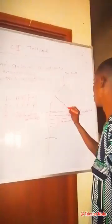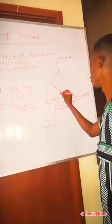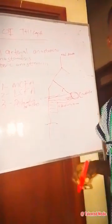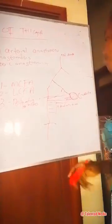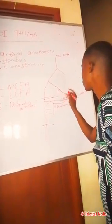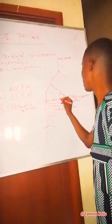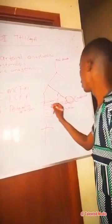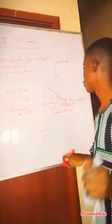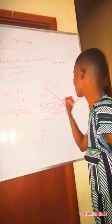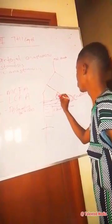The third anastomosis is the trochanteric anastomosis. It is also formed by four structures: the descending of the superior gluteal artery, the descending of the inferior gluteal artery, the ascending of the lateral circumflex femoral artery, and the ascending of the medial circumflex femoral artery. Together they form the trochanteric anastomosis.